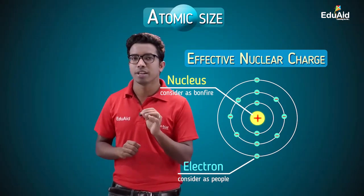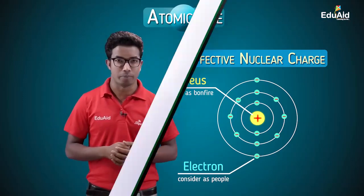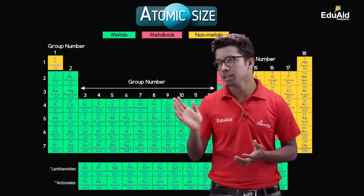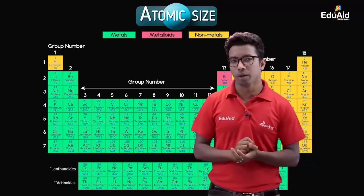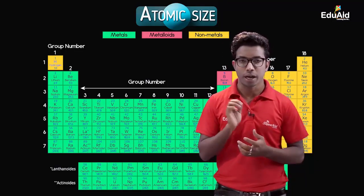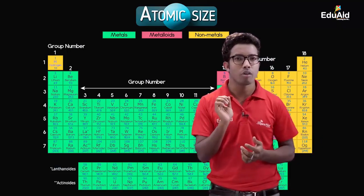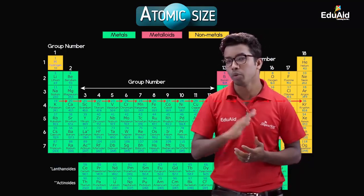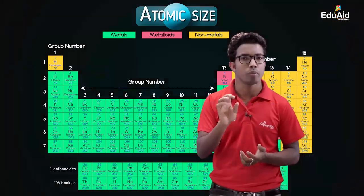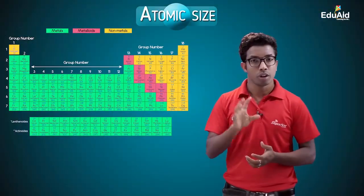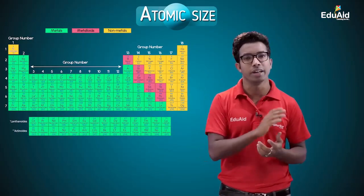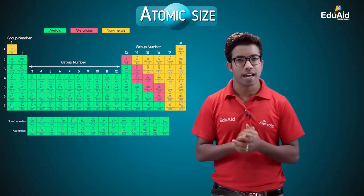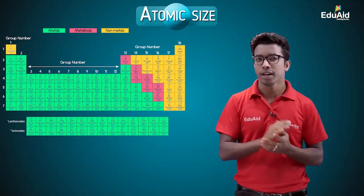Now let us see how effective nuclear charge determines the size of an atom, and how atomic size changes throughout a period of the modern periodic table. Looking at the periodic table, the atomic number increases throughout a period from left to right — from group 1 to group 18. Since atomic number equals the number of protons, and protons have positive charge, nuclear charge increases across a period. Along with this, the number of valence electrons also increases across a period.